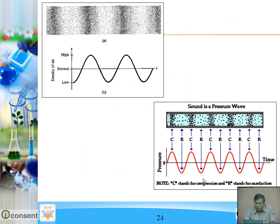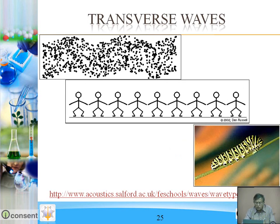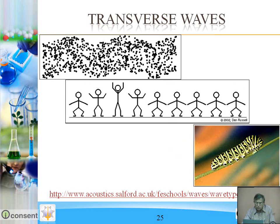Crest means the upper one, this is the trough. Here again, the same graph — see that — C means compression, R means rarefaction. Now see examples of transformation.